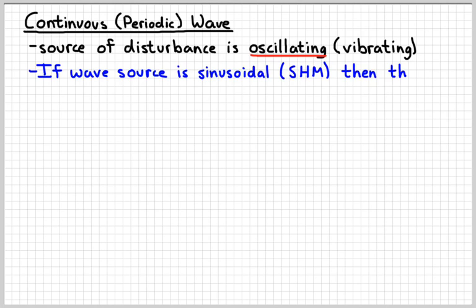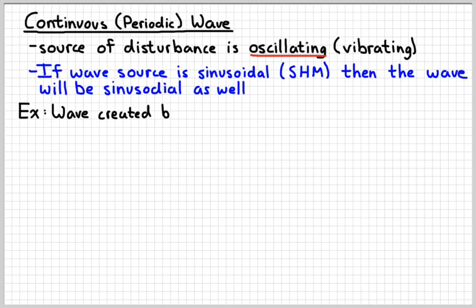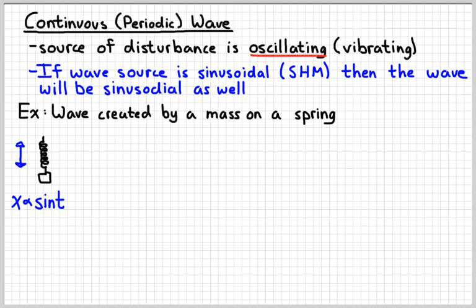Now if the wave source is sinusoidal, like something moving in simple harmonic motion, then the wave is going to be sinusoidal as well. So remember, a good example of sinusoidal motion is a simple harmonic oscillator, like a mass on a spring. So if I have a mass on a spring that's continuously moving up and down, remember that means its position is proportional to the sine of time as time passes, then it's going to create a wave that looks like that. So you can imagine, if this is something bobbing up and down in water, the blue wave that I just drew would represent the shape of the water as the waves travel to the right.